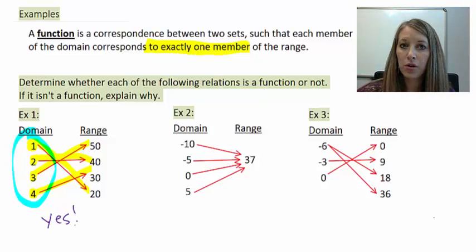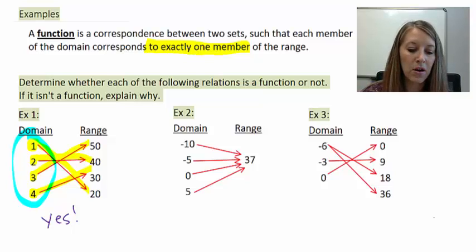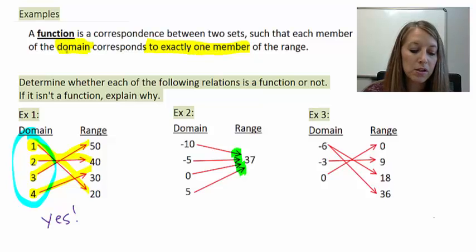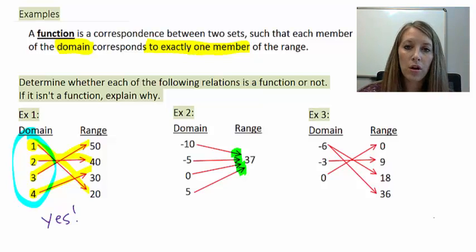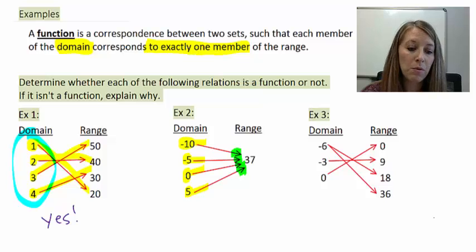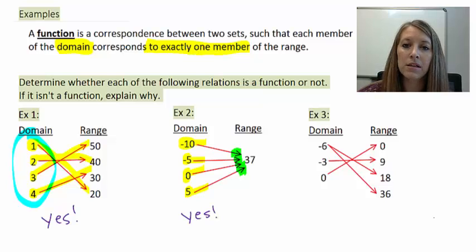In example two, at first glance most students say this is not a function because there are quite a few different correspondences in the range. But remember, the rule is that each member of the domain corresponds to exactly one member of the range — the range can actually have more than one correspondence. Looking more closely, each domain member has one and only one correspondence to the range. The range can repeat, but the domain cannot. So this is yes, a function, because the domain does not have any repeated values.